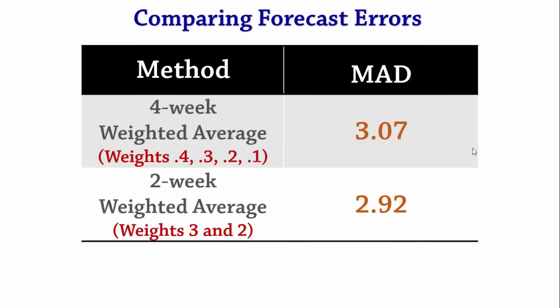Now let's compare the error measures. The MAD was 3.07 using the 4-week moving average method with weights 0.4, 0.3, 0.2, 0.1. And the MAD was 2.92 using the 2-week weighted moving average with weights 3 and 2. Since the MAD is an error measure, smaller MADs produce better smoothing of the data.